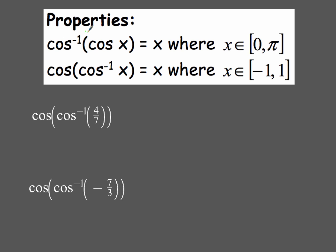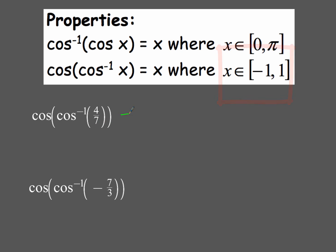For the trig-ratio problems with cosine: cos(arccos(4/7)) — since 4/7 is within -1 to 1, the answer is simply 4/7. For cos(arccos(-7/3)), since -7/3 equals approximately -2.33, which is outside the range of -1 to 1, there is no solution, which can also be written as the empty set.